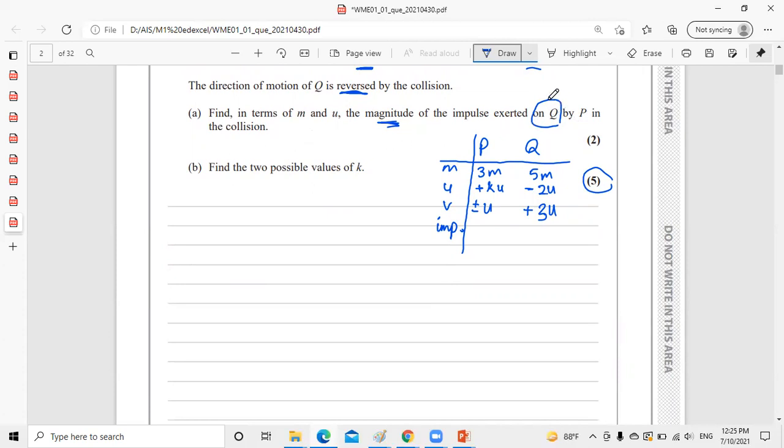Now we need to find the impulse on Q. We know this is reversed direction, so it became positive. It was moving left and the impulse was on the right. This impulse was positive, this impulse was negative, same value. They have the same value because we're talking about action-reaction. The impulse is the same but in opposite direction.